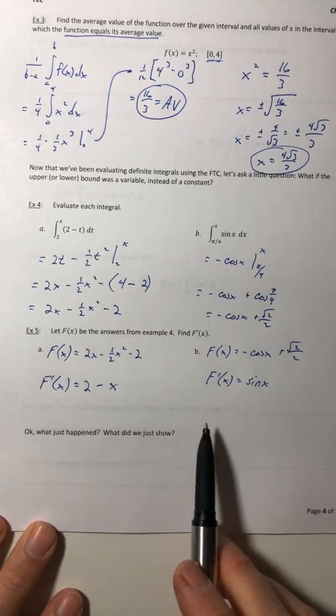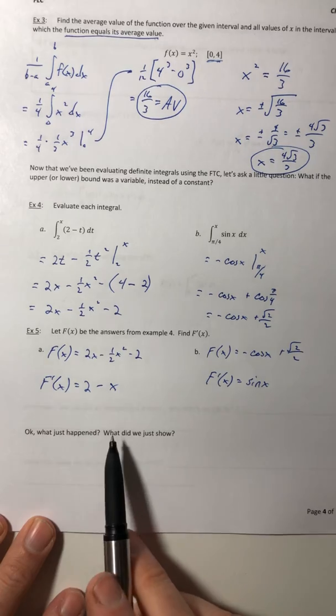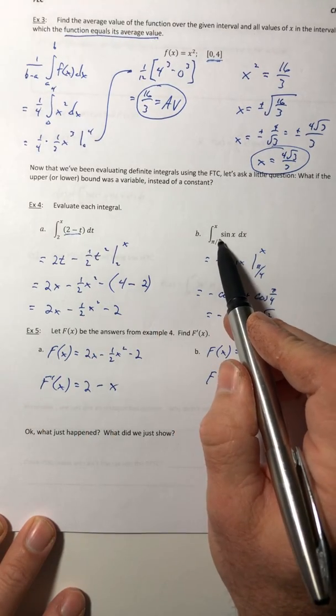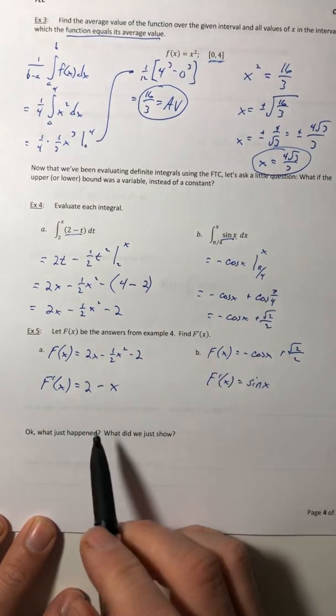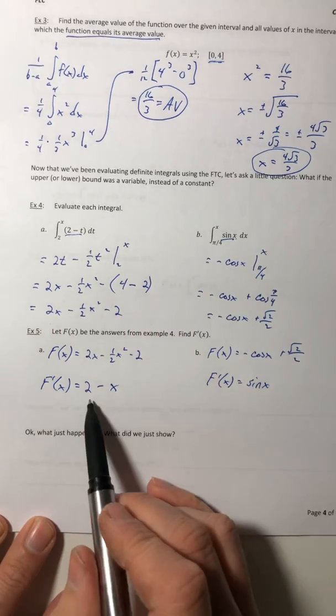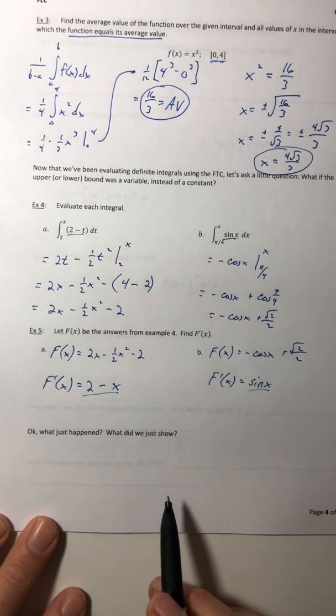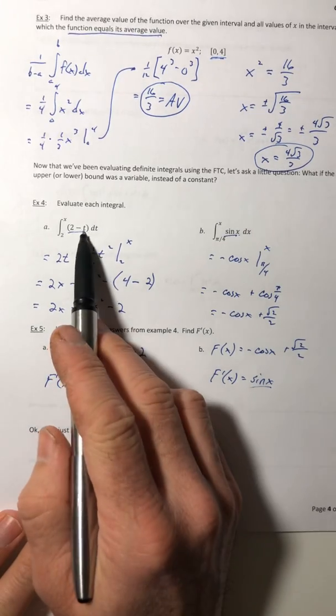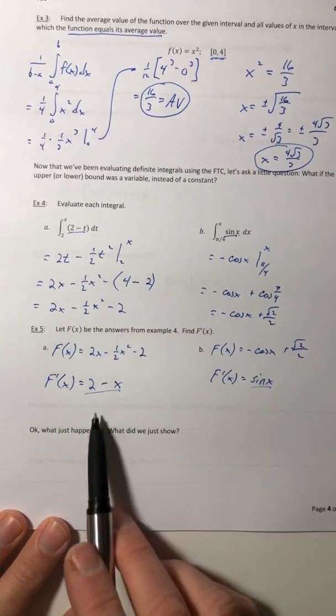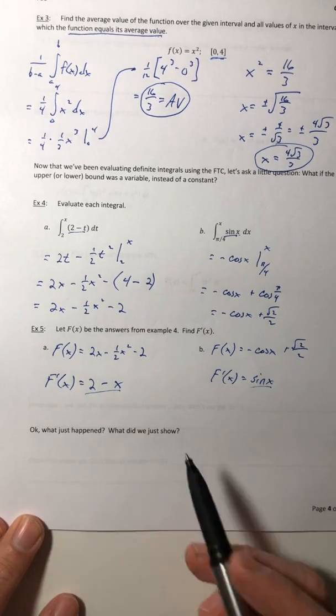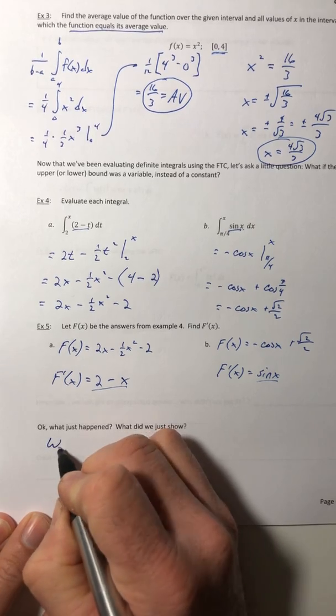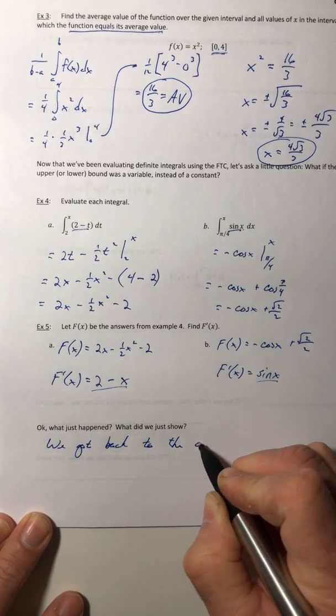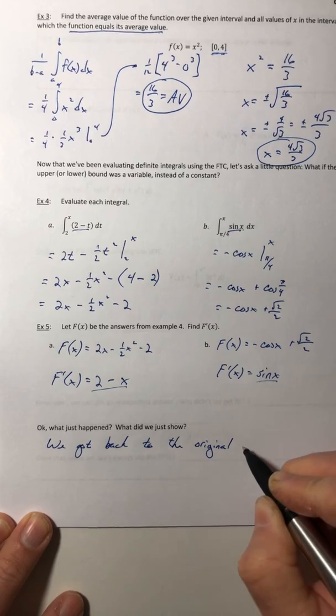All right, so do you notice anything about what just happened between these two examples? Well, look at what we started with. The function that was inside the integral, the integrand. What do you notice about what I just underlined compared to your derivatives? Hey, they're the same. Almost. It's just that the integrand had the variable of t in this one, and it switched over to x in this one. So we got back to the original integrand.